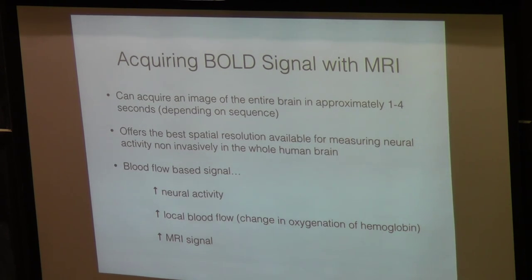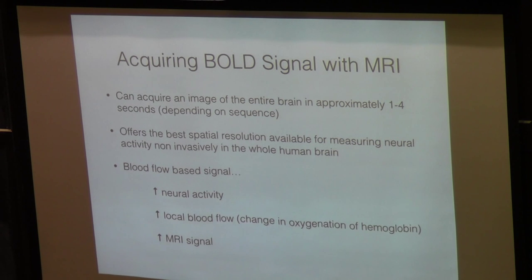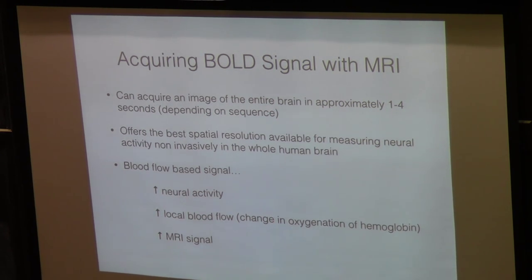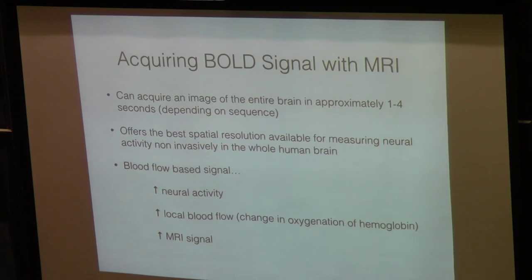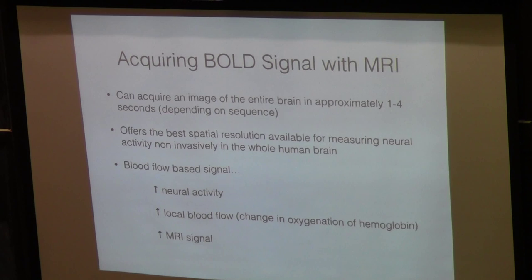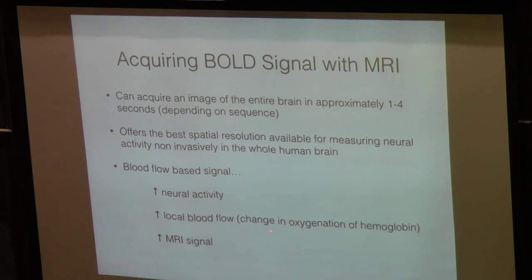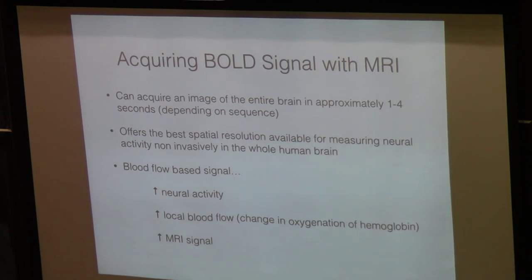What we do benefit from with MRI is really good spatial resolution for measuring neural activity. We're able to measure activity over the entire area of the brain, which you can't do when recording from single neurons. Neural activity increases local blood flow, there's a change in oxygenation of hemoglobin, and that gives rise to the MRI signal.